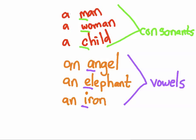So basically that's the rule. If the next word starts with a consonant, you use 'a.' If the next word starts with a vowel, you use 'an,' like an angel, an elephant, or an iron. The only exception to the rule is if you have a silent H,